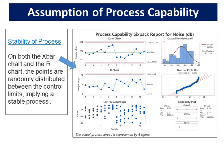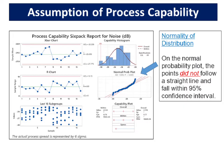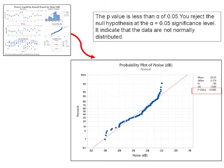On both the X-bar chart and the R chart, the points are randomly distributed between the control limits, implying a stable process. On the normal probability plot, the points did not follow a straight line and fall within the 95% confidence interval. The null hypothesis for the normality test is that data follows a normal distribution, while the alternative hypothesis is that data do not follow a normal distribution. The p-value is less than 0.005. Since the p-value is less than alpha of 0.05, we reject the null hypothesis and conclude with 95% confidence that the data is not normally distributed.